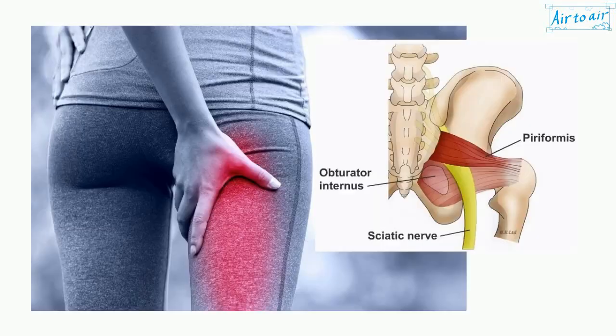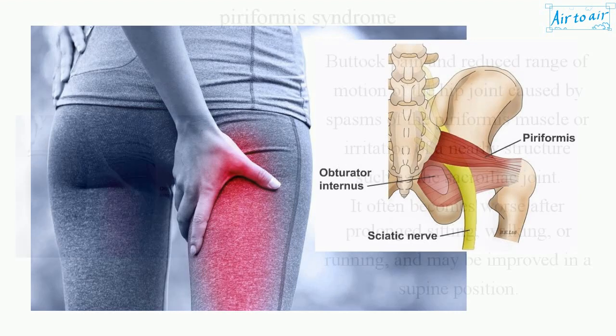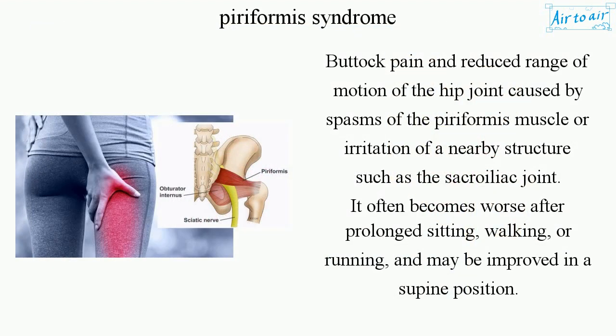Piriformis syndrome is buttock pain and reduced range of motion of the hip joint caused by spasms of the piriformis muscle, or irritation of a nearby structure such as the sacroiliac joint. It often becomes worse after prolonged sitting, walking, or running, and may be improved in a supine position.